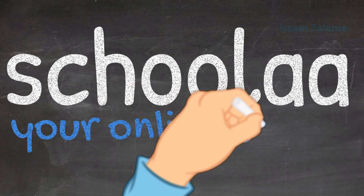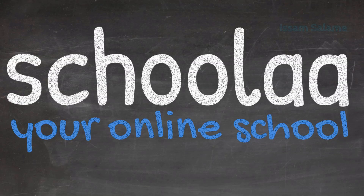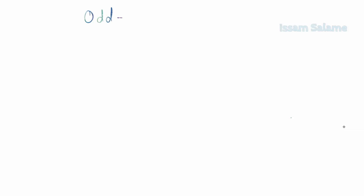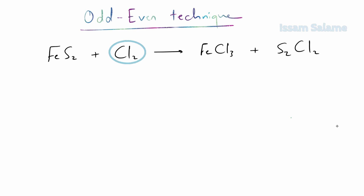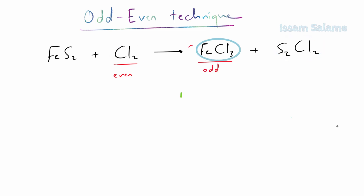Stay tuned as we talk about the odd-even technique and how to deal with polyatomic ions. The odd-even technique is used to balance chemical reactions when the number of a certain atom is odd on one side and even on the other. We multiply the odd side by 2 to make both sides even, then continue balancing. In this example, the number of chlorine atoms on the left is even, while on the right side the total is odd — three plus two equals five.